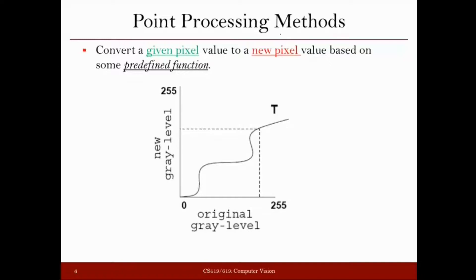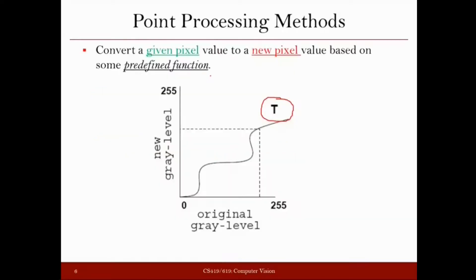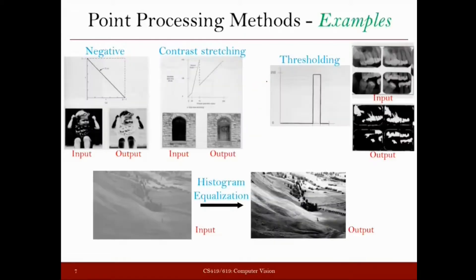In case of point processing methods, what we need to define is just the transformation we are going to perform on the original intensity. If a pixel has a particular intensity and we want to get the new intensity, we define what kind of transformation or operation we want to perform on it. If that is defined, then given the input gray level, we can find out what should be the new gray level in the output image. So for point processing methods, what you have to define is just this transformation function T. Let us see some examples of point processing methods.